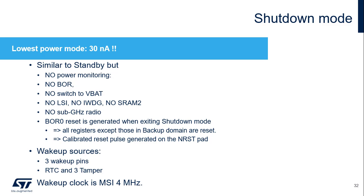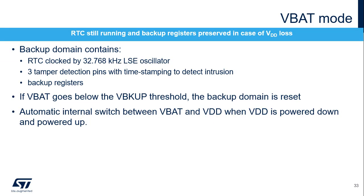When exiting shutdown mode, the wake-up clock is MSI at 4 MHz. The backup domain allows you to keep the RTC functional and to preserve the backup registers in case the VDD supply is down, thanks to a backup battery connected to the VBAT pin. The backup domain contains the RTC clocked by the low-speed external oscillator at 32.768 kHz. Three tamper pins are functional in VBAT mode and will erase the 128-byte backup registers in case of intrusion detection. The backup domain also contains the RTC clock control logic. If VDD drops below a threshold, the backup domain power supply automatically switches to VBAT and back when VDD returns to normal. The VBAT voltage is internally connected to an ADC input channel to monitor the backup battery level, and when VDD is present, the battery connected to VBAT can be charged from the VDD supply.